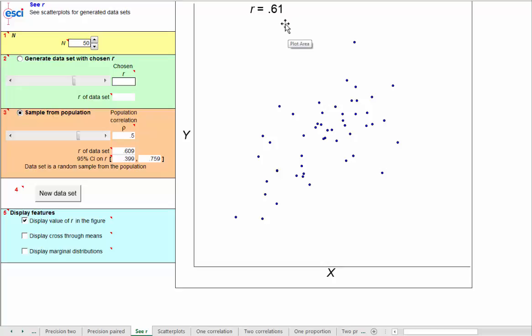And for each sample, I get not just the r value, but also the 95% confidence interval on that r value. So the 0.61 is our point estimate of the population rho, and this confidence interval is our interval estimate, here running from 0.399 up to 0.759. So as I click, we get a dance of the r values and also a dance of the confidence intervals on r. Watch these values here as I click and take a number of successive samples.